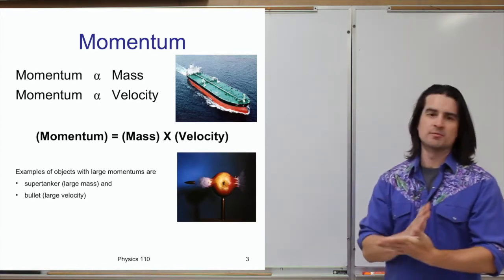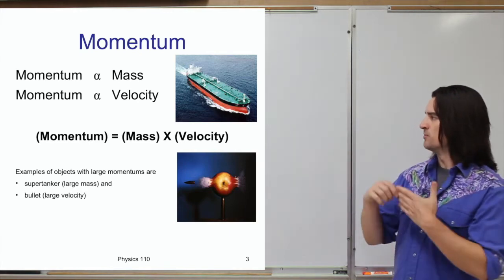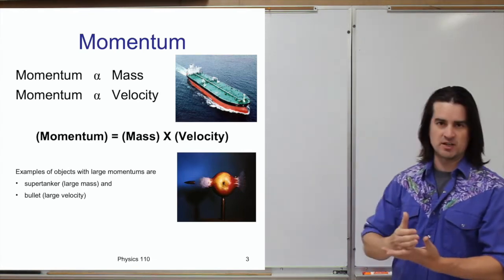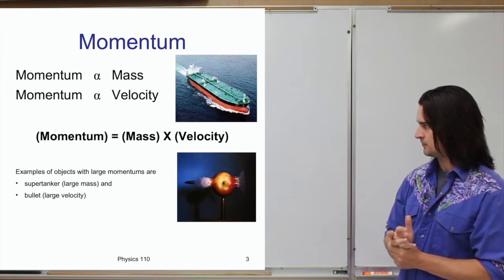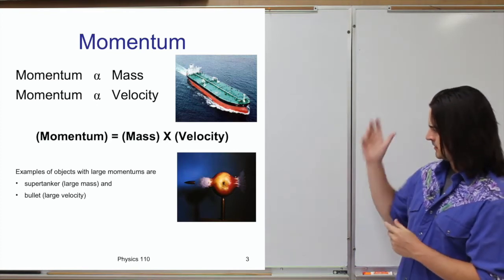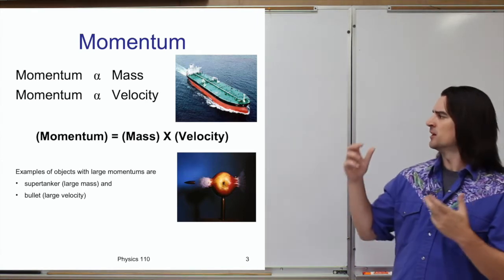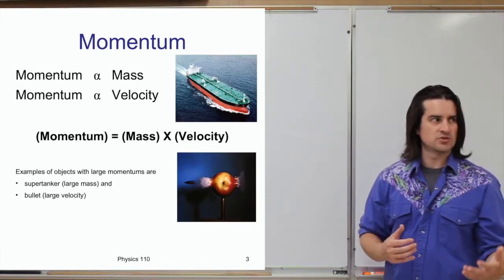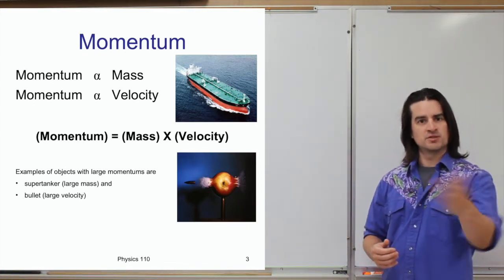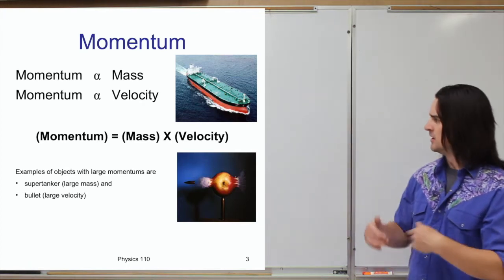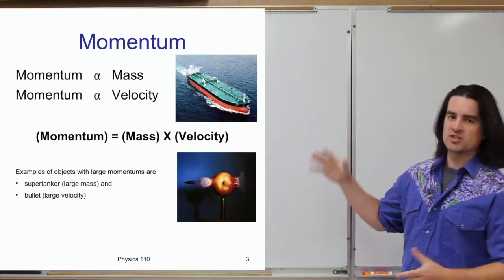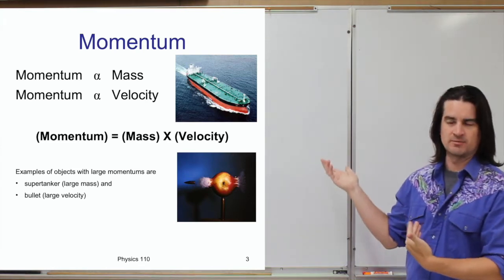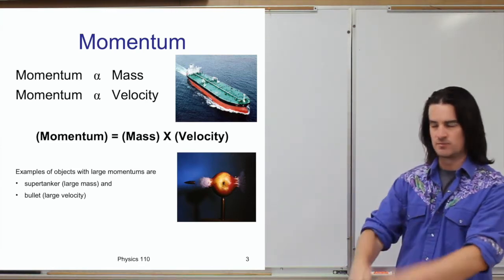It turns out momentum is only made up of those two things. Momentum is explicitly — as a mathematical relationship — equal to the mass of an object multiplied by its velocity. Momentum is also a vector quantity, meaning it has a magnitude and it points in a particular direction. The magnitude is essentially mass times speed, and the direction is the direction the object is moving. So momentum is in the same direction the object is moving.